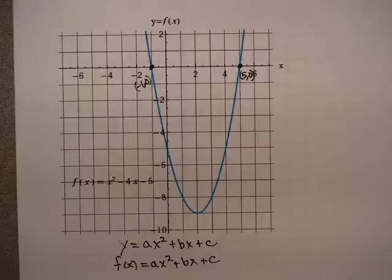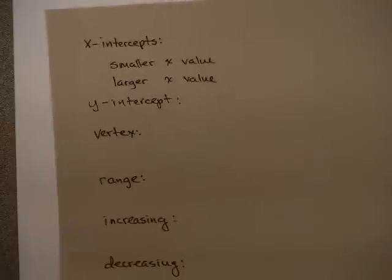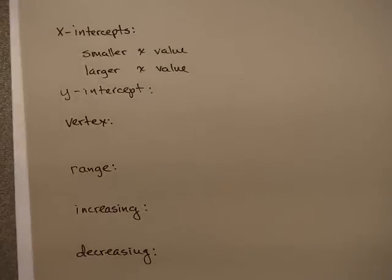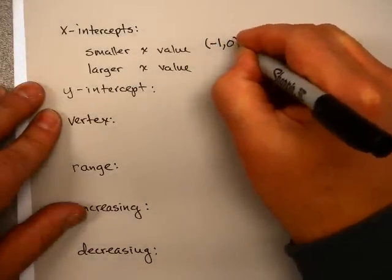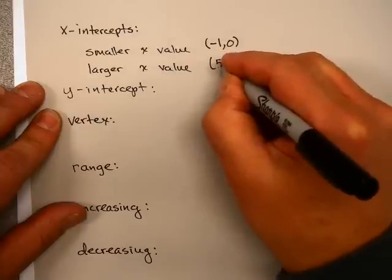Now WebAssign will ask you to enter these in as ordered pairs, and it will ask you to enter them with the smaller x value and the larger x value. So if this were your WebAssign right here, the smaller x value in this case is (-1, 0), and the larger x value is (5, 0).